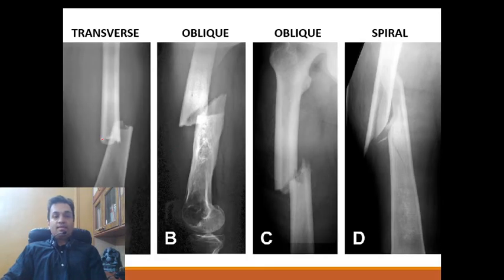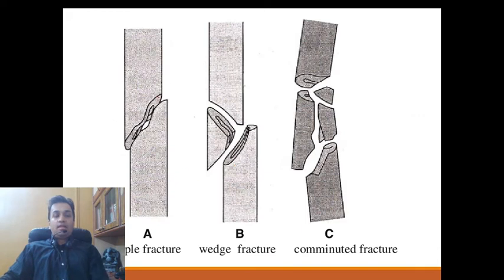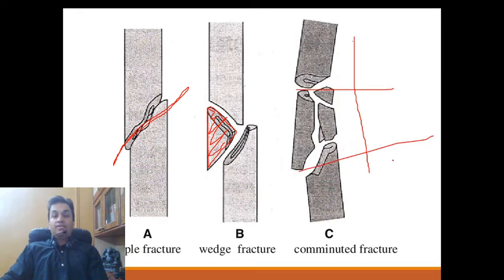Looking at x-ray examples: figure A shows a transverse fracture line, figure B shows an oblique fracture line at an angle with the longitudinal axis, figure C also shows an oblique fracture — with figure B being a short oblique and figure C a long oblique — and the last is a spiral fracture line. Another set: a simple fracture broken into two pieces, a wedge fracture with the butterfly fragment highlighted, and a comminuted fracture with a long fracture site and many pieces, making anatomic reduction difficult and increasing the likelihood of nonunion and malunion.